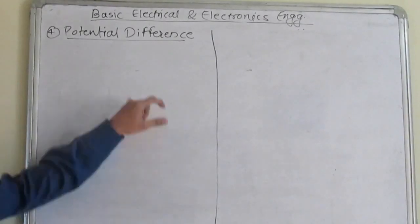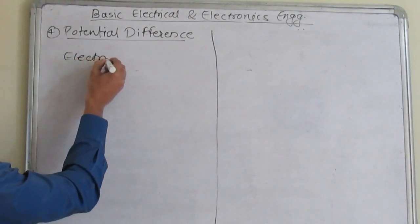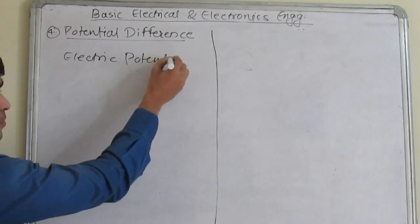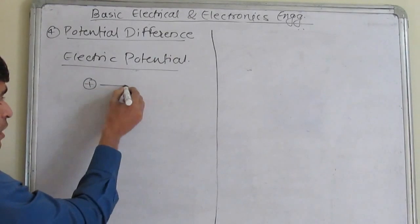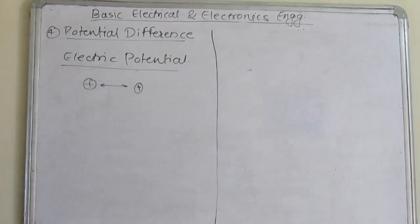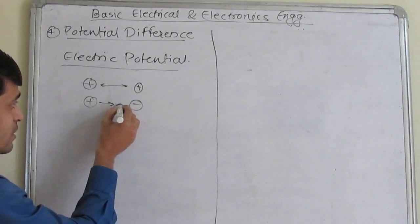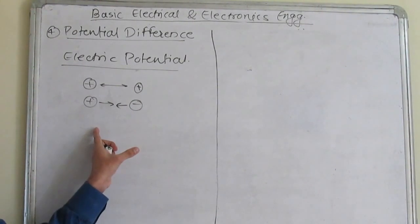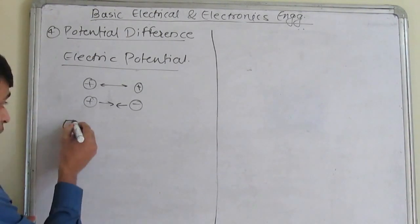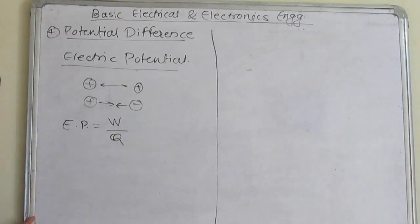Potential difference. Before learning the potential difference, we will learn the concept of electric potential. We all know that similar charged particles repel each other, and dissimilar charged particles attract each other. This means that every charged particle has a tendency to do work. This ability of a charged particle to do work is called the electric potential. That means electric potential is equal to work done upon charge.